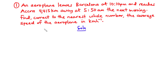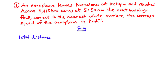From the question, we are told that the aeroplane leaves Barcelona at 10:10 pm and then reaches Accra, 4415 km away, at 5:50 am the next morning. So the distance between the two cities is 4415 km, and that is the distance travelled by the aeroplane. So the total distance covered is 4415 km.